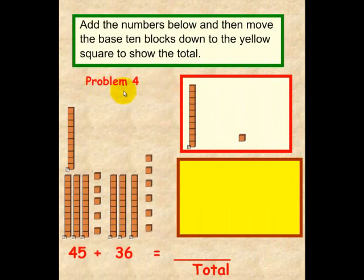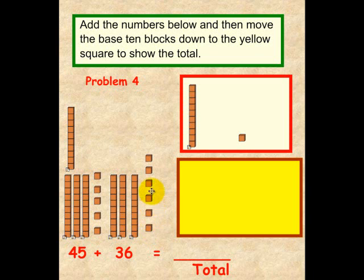Problem four. Just like the other two, we're going to add the numbers forty-five — one, two, three, four tens, and one, two, three, four, five ones — plus thirty-six — one, two, three tens, and one, two, three, four, five, six ones. If you would, please pick up a black pen and draw a line for each one of the tens, and each one of the squares that are left over, and place your total here. Please do that now.